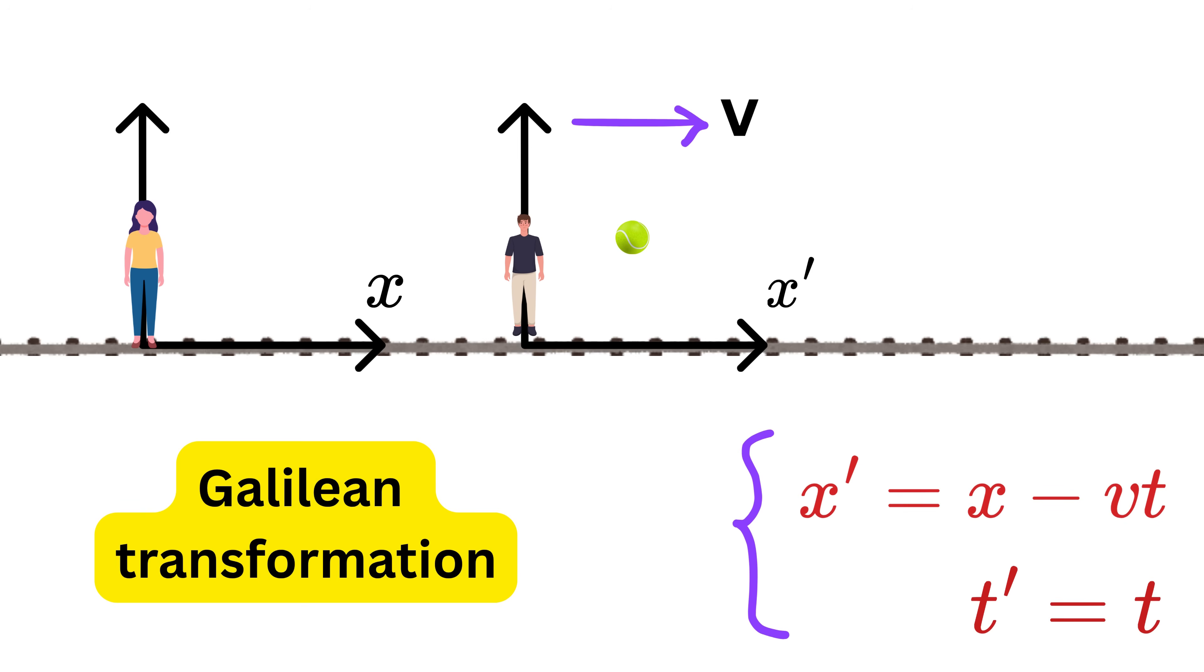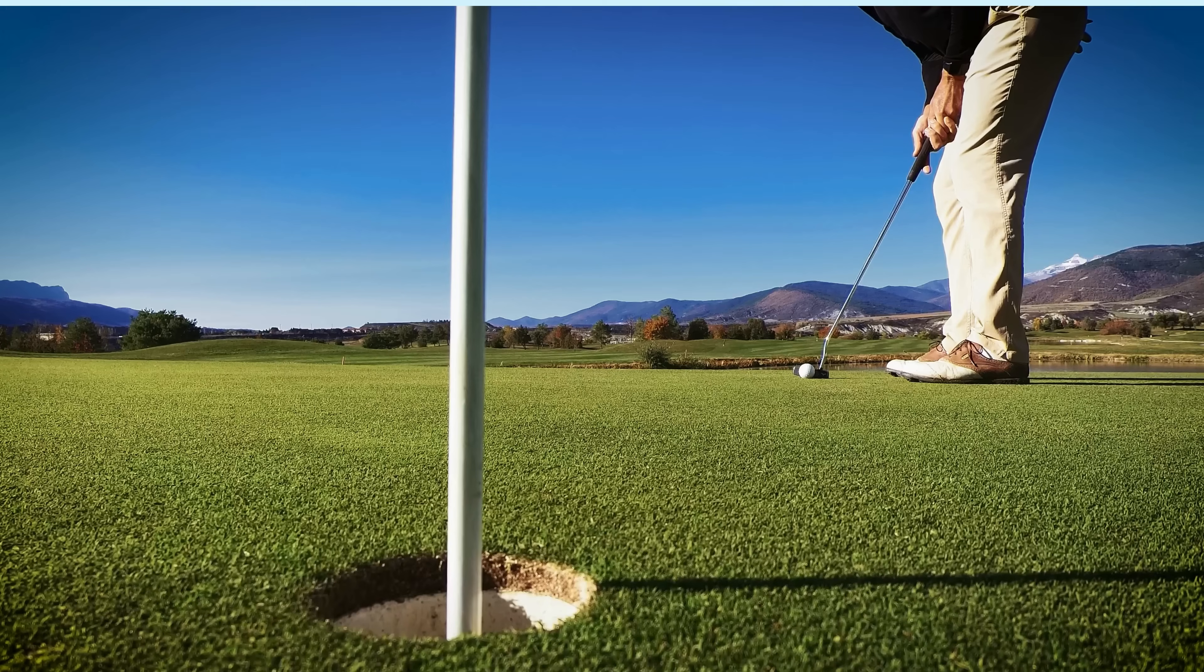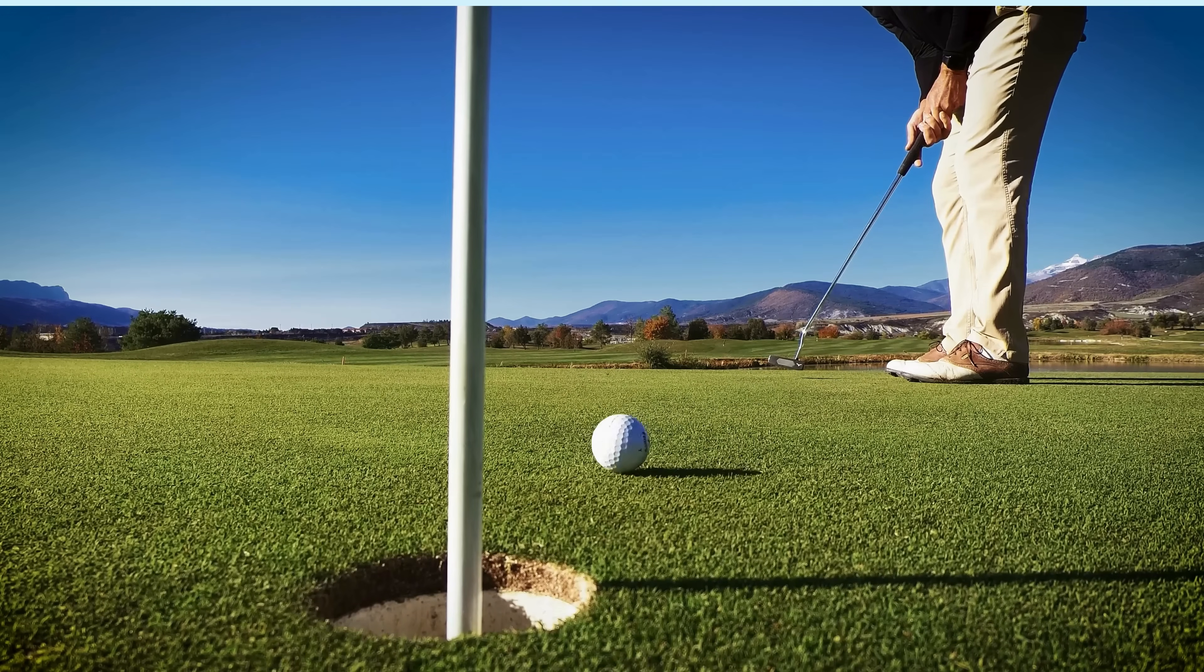And therefore x prime equals x minus v times t. So the Galilean way of switching between frames is this: x prime will be this and t prime is the same as t. This works well for everyday things like cars, balls, trains, bullets, as long as the speeds are much lower than the speed of light.